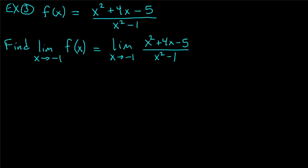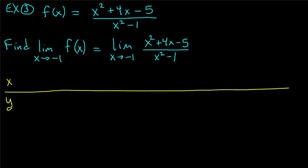Example three: f(x) = (x² + 4x − 5)/(x² − 1). We want to calculate the limit as x approaches −1. We want to know what f(x) gets close to as x approaches −1. We'll make a table — and by now we know not to bother plugging in −1, since that has nothing to do with the limit.